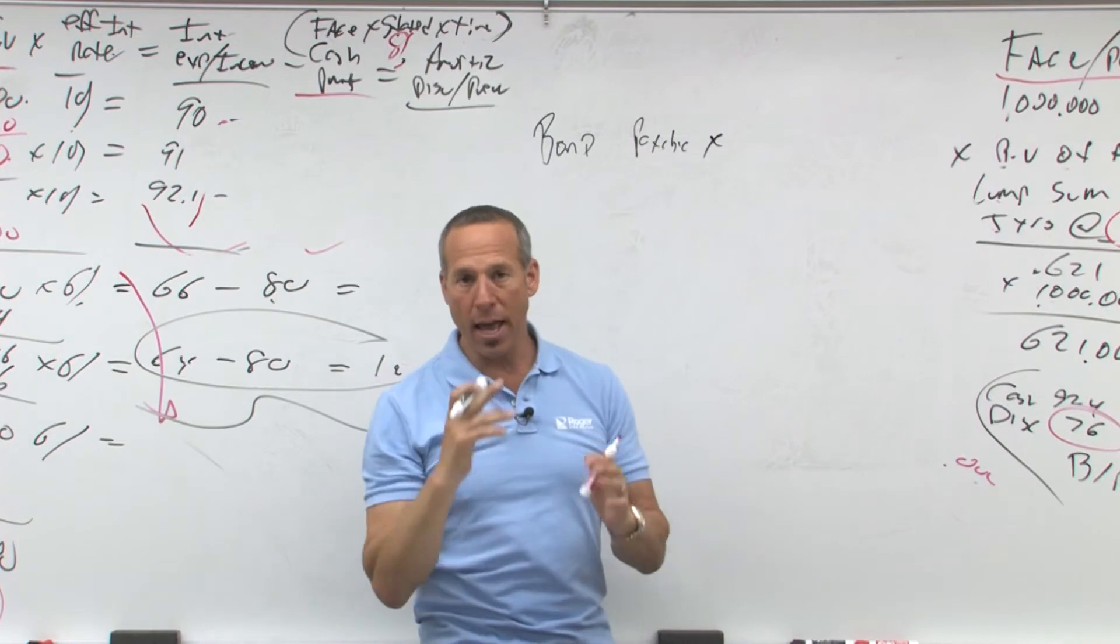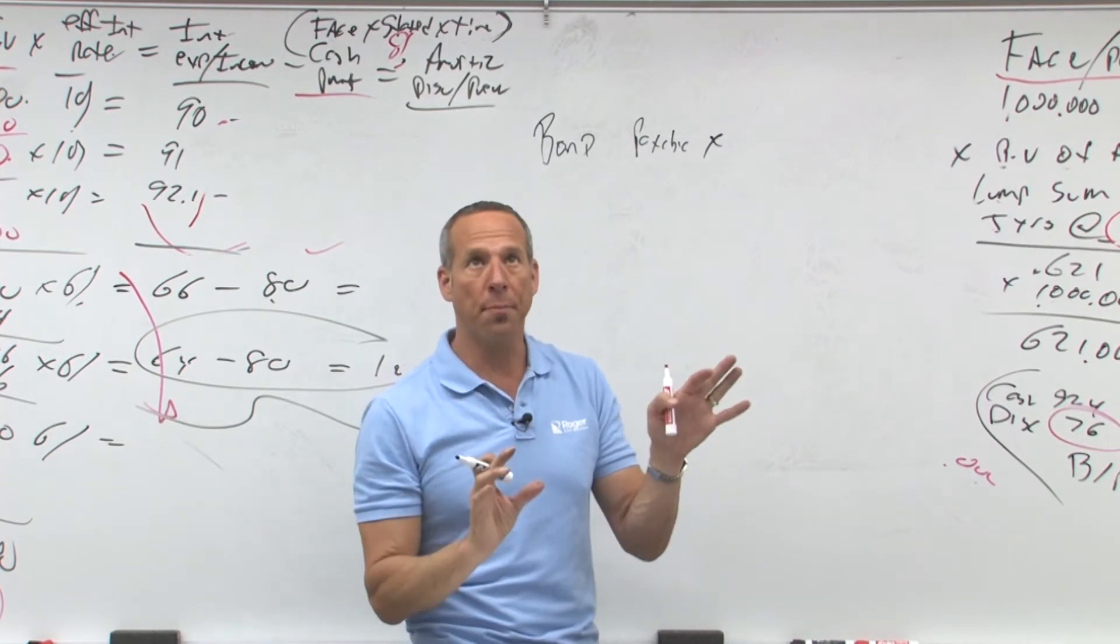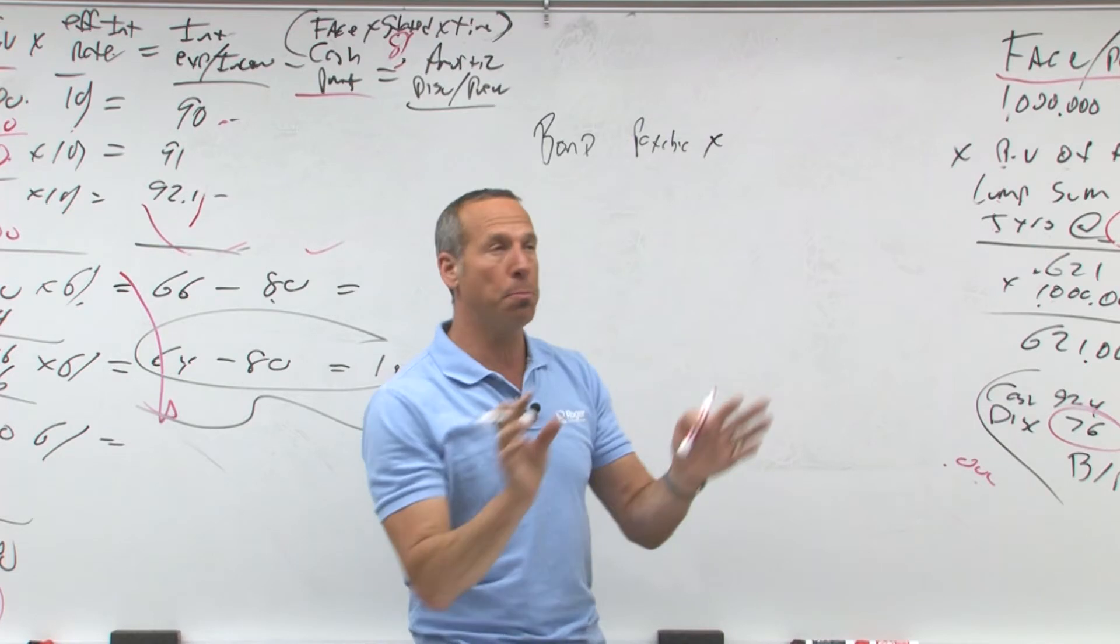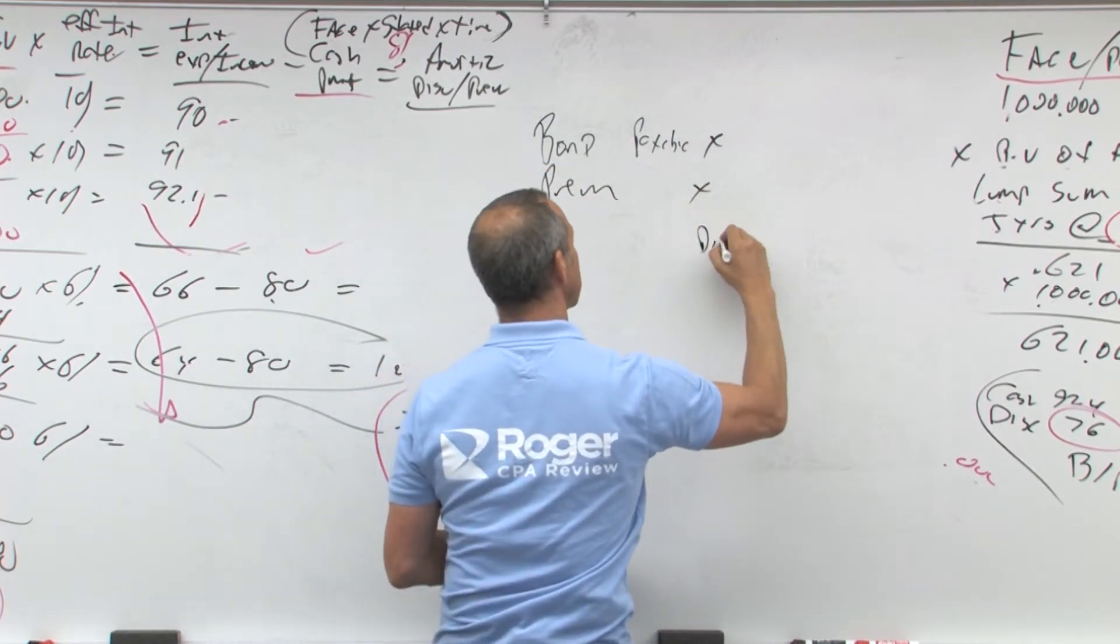Now if there's any unamortized discount or premium, get rid of it. So remember when we had debit discount, credit premium, boom, debit premium, credit discount.